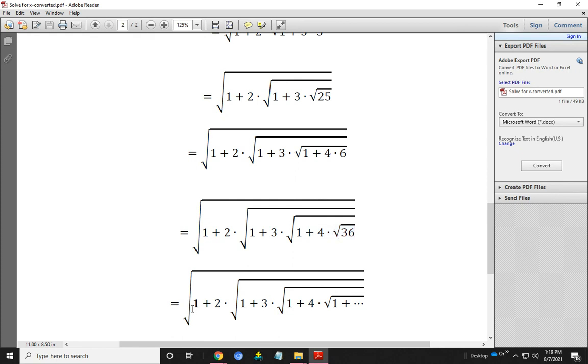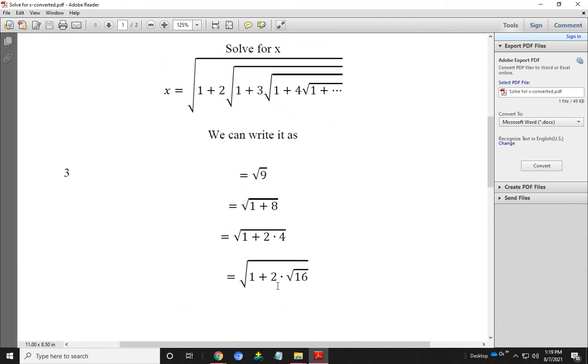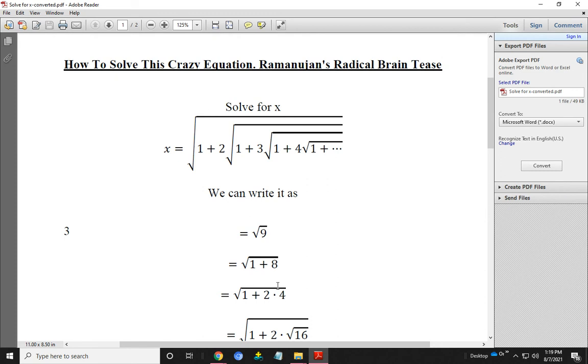Proceeding in this way we get our solution: 1 plus 2 into root over 1 plus 3 dot root over 1 plus 4 dot root over 1 and so on. So the value of x equals 3. This is the possible solution. This is crazy mathematics.